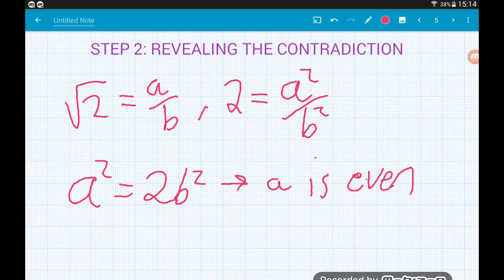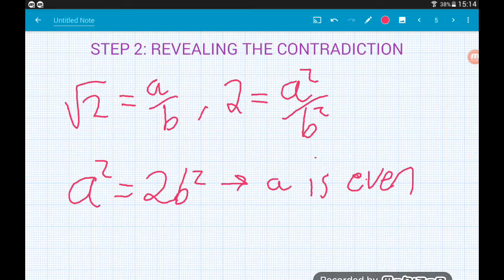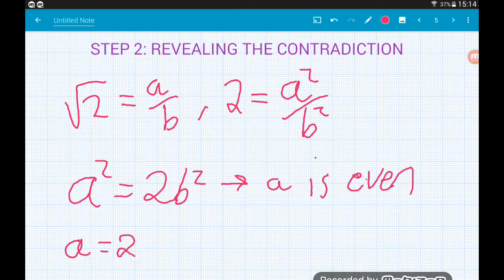Okay, now there's no problem there yet. Let's say if a is even, then there would be some number c, such that a is equal to 2c. Okay, right, so remember that for a sec.